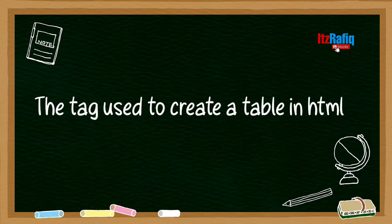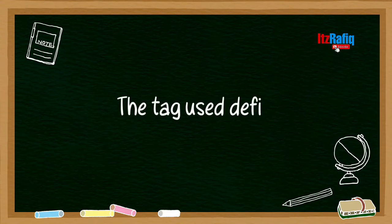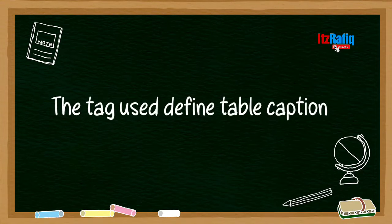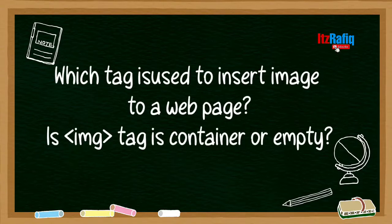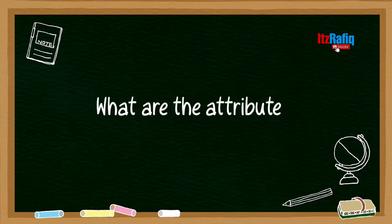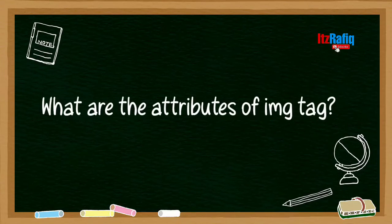And which tag is used to create a table in HTML - table tag, which is used to define table. Then table caption tag. Then which tag is used to insert image to a webpage - IMG tag. Is IMG a container or empty tag? It's an empty tag. What are the attributes of IMG tag? Src, alt, height, width. So these types of questions may be asked from this chapter.